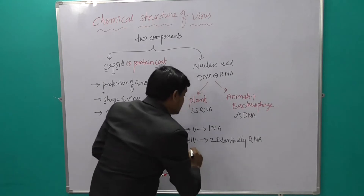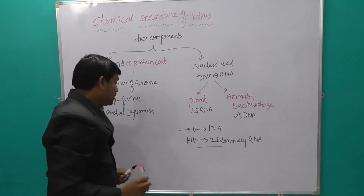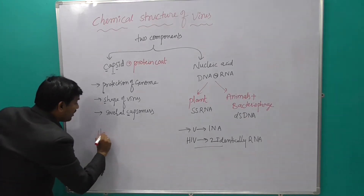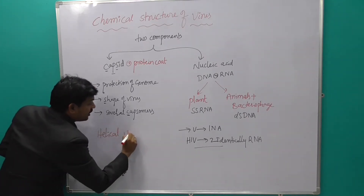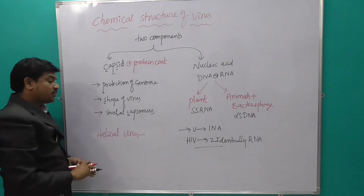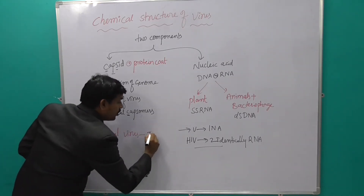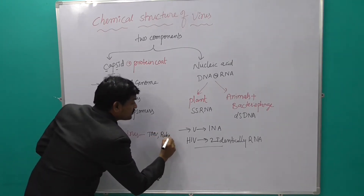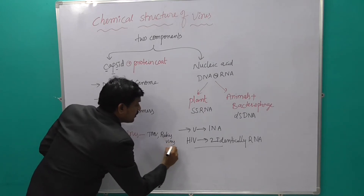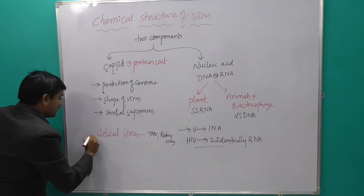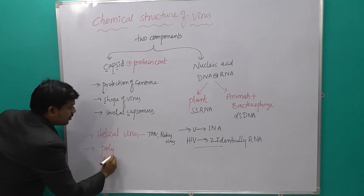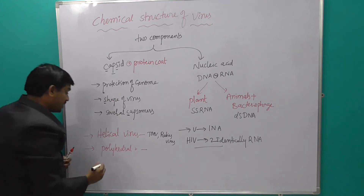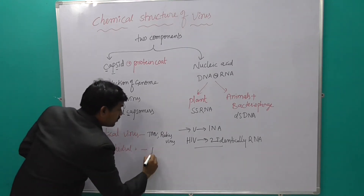Different shapes are present in viruses. The first shape is helical virus — the best examples are TMV and rabies virus. The next is polyhedral virus — the best example is polio virus.